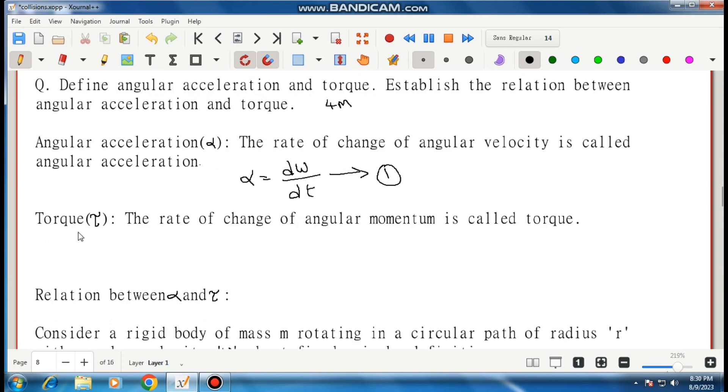Next definition torque. The symbol is tau. The rate of change of angular momentum is called torque. The formula torque is equal to dL by dt. This is equation number two where L is called angular momentum.